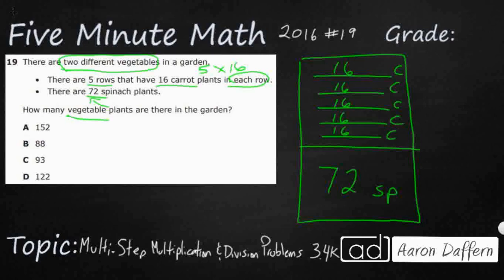So I've got options here. If I want, I can just make a huge addition problem: 16 plus 16 plus 16 plus 16 plus 16, plus 72, and I would get an answer. Or I could multiply it, because repeated addition is another way to do multiplication. If you're not really comfortable with the multiplication standard, you can use repeated addition — that means five sets of 16. But let's look at 16 times 5 and use our multiplication.